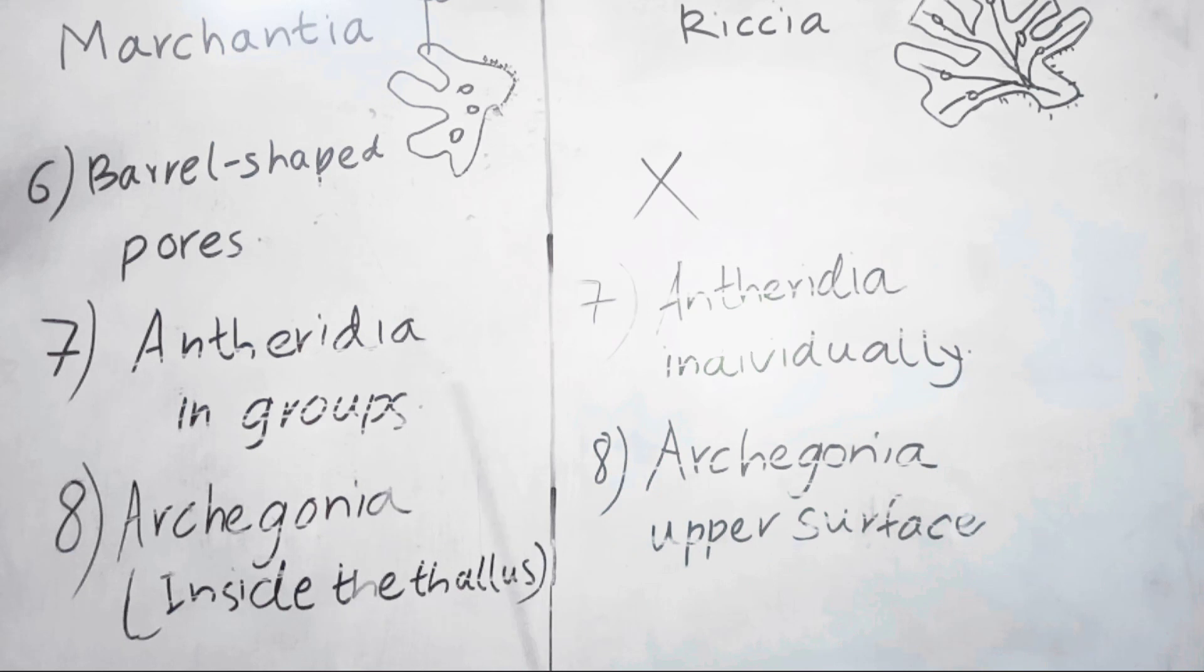Antheridia are male reproductive parts. Antheridia develop in groups in Marchantia. In Riccia, antheridia develop individually.